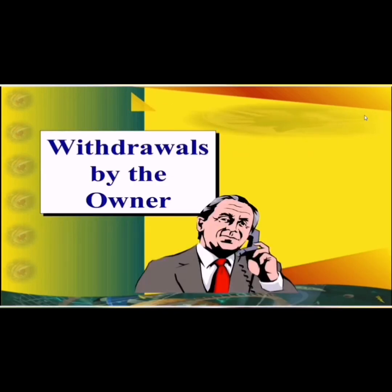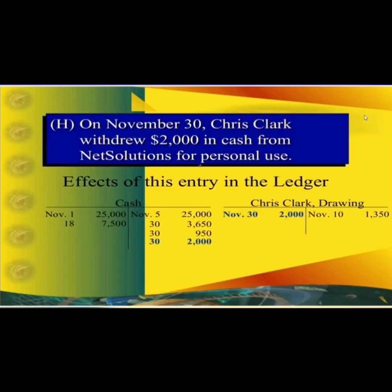When the owner withdraws money from the business, in accounting terms it is called drawings. In the ledger, the 2,000 amount is shown on the drawings account on the debit side. In the cash account, it is shown on the credit side, indicating a decrease in the asset cash and an increase in drawings on the debit side.